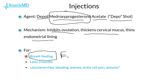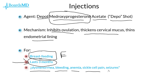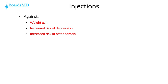Unlike the progesterone mini pill, which must be taken every day, the depo shot is given once every three months, which many patients prefer from a compliance perspective. Other benefits include decreasing dysmenorrhea, decreasing vaginal bleeding and anemia, decreasing sickle cell pain, and decreasing the risk of seizures. However, the depo shot does have disadvantages including causing weight gain, increasing the risk of depression in select patients, and increasing the risk of osteoporosis.